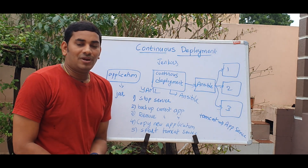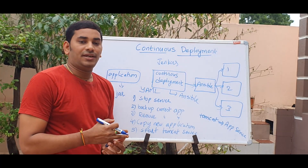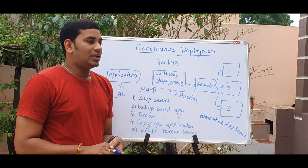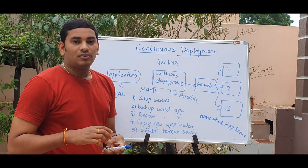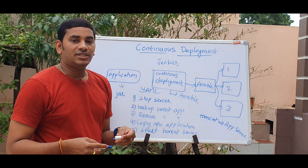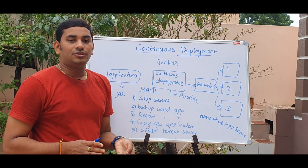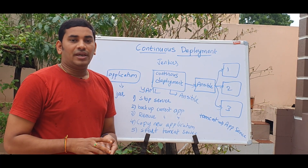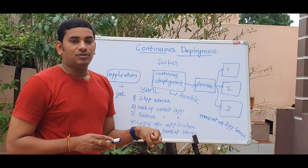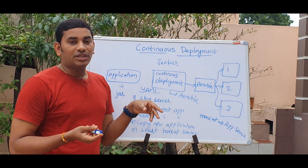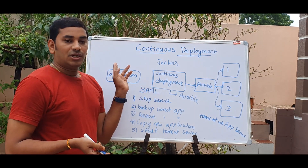This is a very popular interview question: what is the difference between continuous deployment and continuous delivery? Continuous deployment is for non-production environments like dev, staging, pre-production, and performance environments. Continuous delivery is for production — in that environment, you follow proper procedures: the delivery manager approves, the application is approved, and then you deploy. Continuous delivery requires manual approval, while continuous deployment is automated for non-production environments.